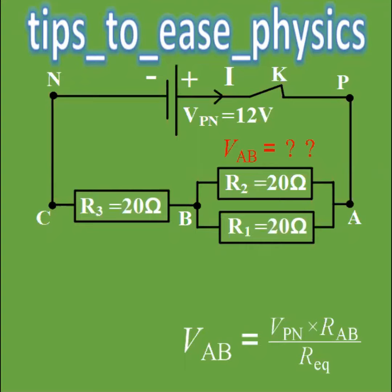Here take care. RAB is the resistor between the two points A and B but here we have two resistors that are connected in parallel. So first we should calculate the R equivalent of these two resistors.